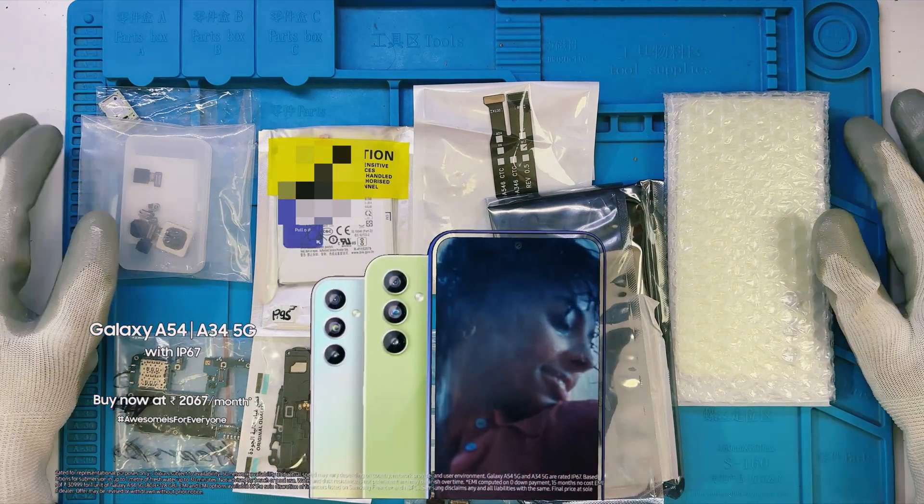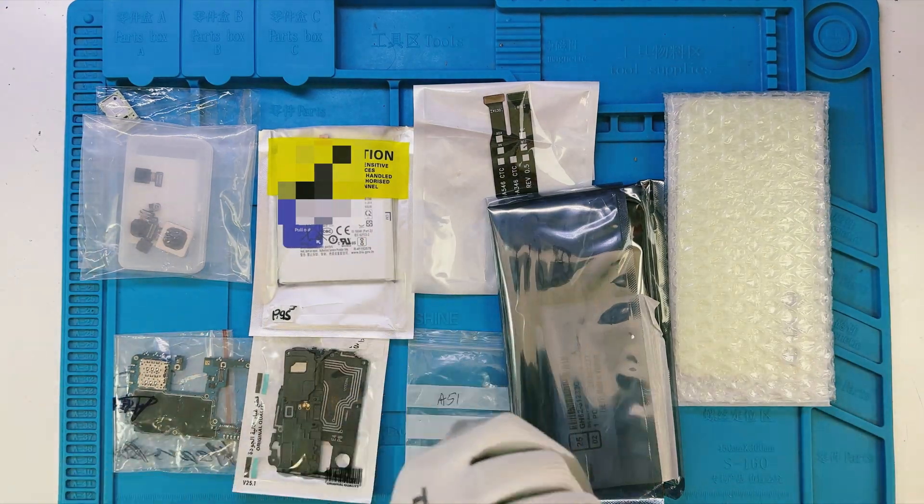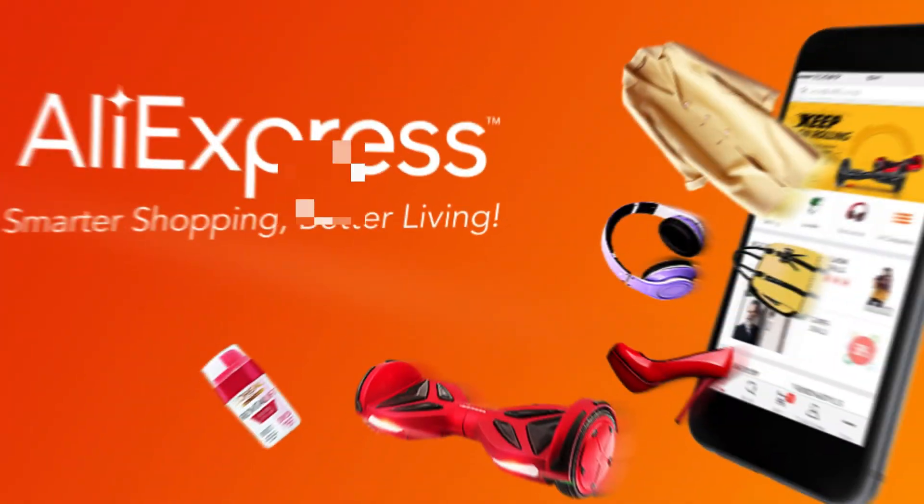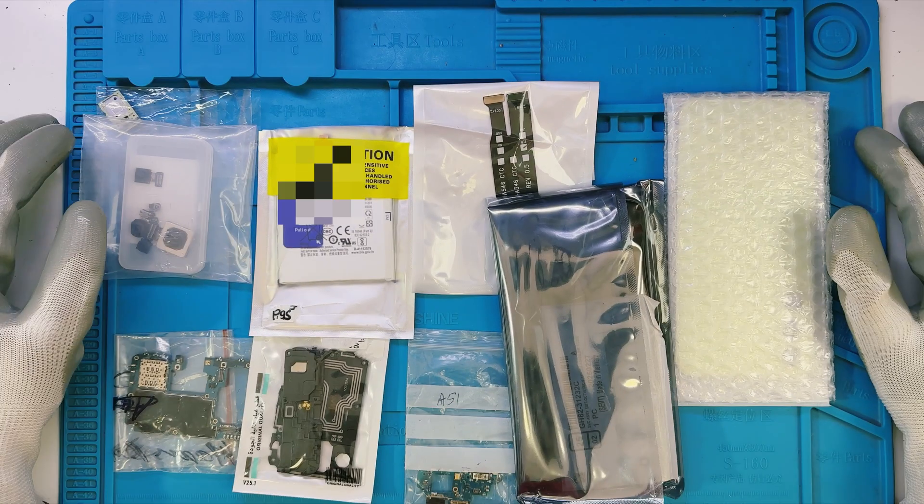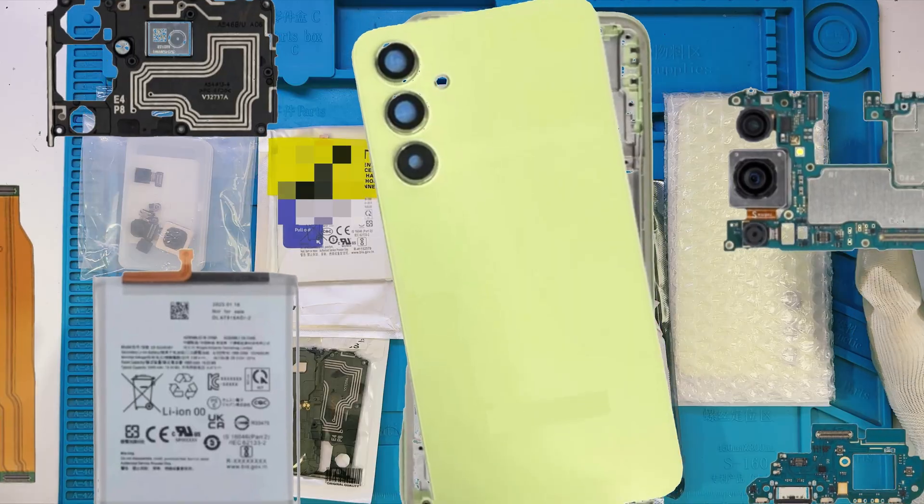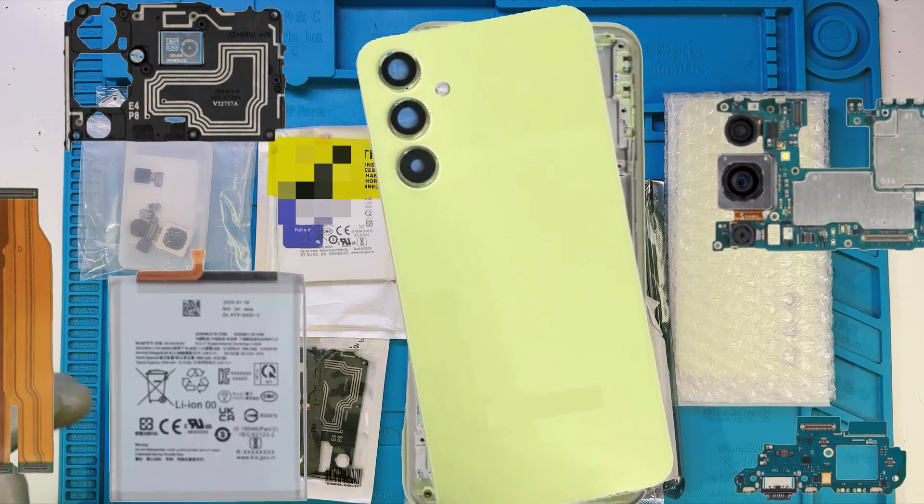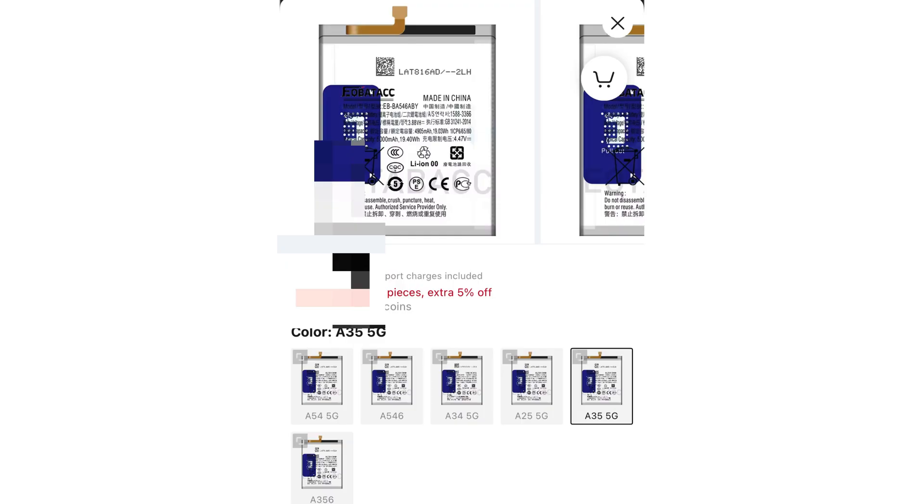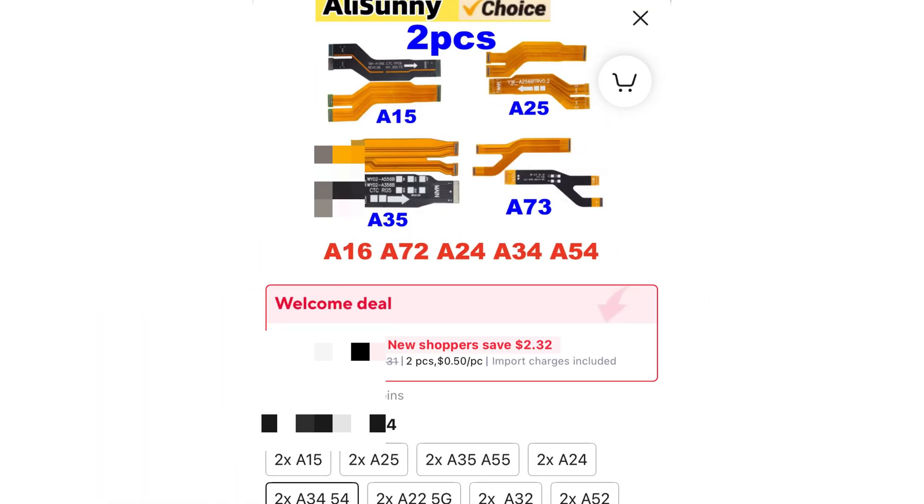Today, we're tackling a huge question. Can you really save money, or even succeed, by building a Samsung Galaxy phone completely from spare parts bought on AliExpress? In this box lies every component required to assemble a Samsung A54 5G. I hunted for the cheapest parts possible, which, unsurprisingly, brought its own challenges.